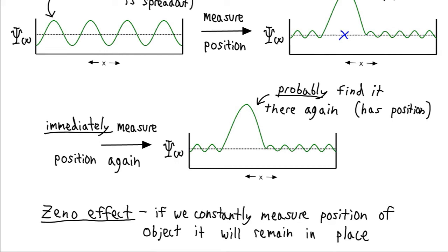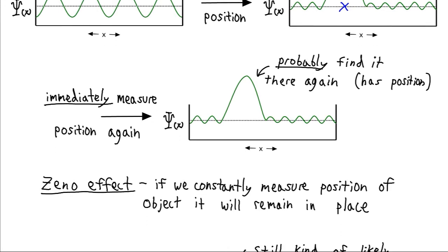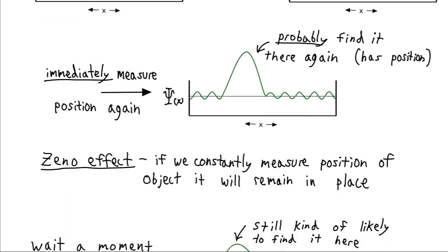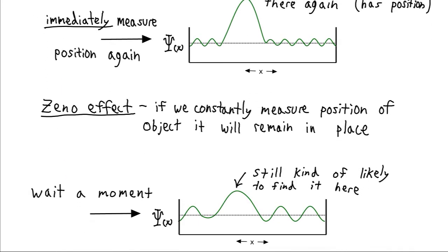If you watch Doctor Who, they have those angels that if you look at them, they're frozen in stone. And as soon as you look away, then they can move around. And Doctor Who calls it quantum locking. But it's actually a real thing, that if you persistently measure an electron or some other quantum object, that's going to fix its properties until you stop measuring it.